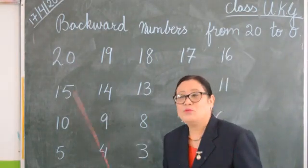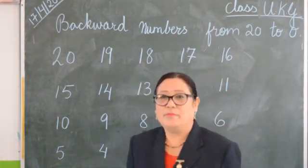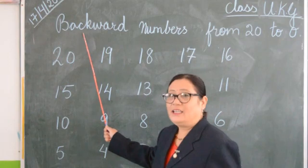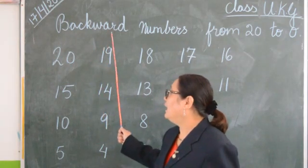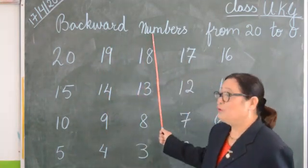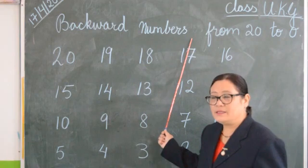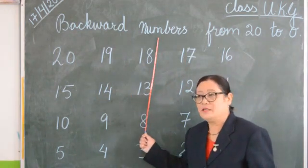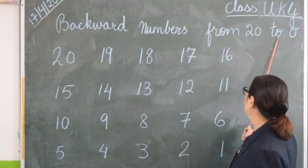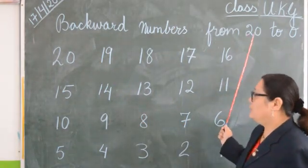These are the backward numbers. What are these? These are backward numbers. How do you spell backward numbers? B, A, C, K, W, A, R, D — backward. Numbers: N, U, M, B, E, R, S — numbers. Backward numbers from 20 to 0.